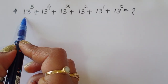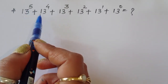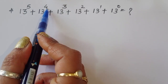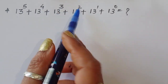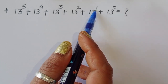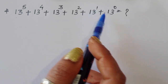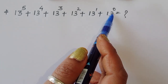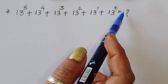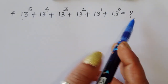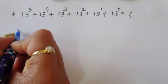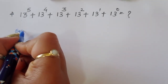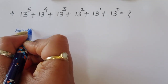The question is: 13 power 5 plus 13 power 4 plus 13 power 3 plus 13 power 2 plus 13 power 1 plus 13 power 0 is equal to what? We have to find out the value of this term. Let's see the solution.